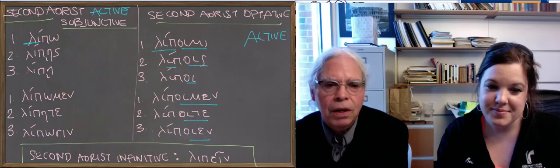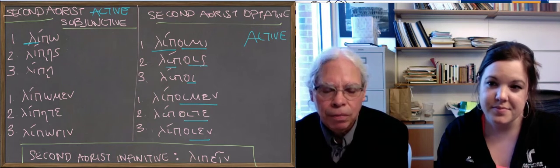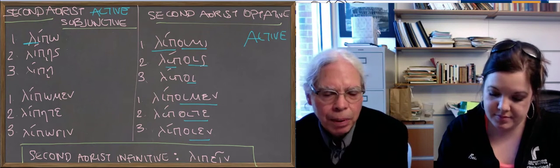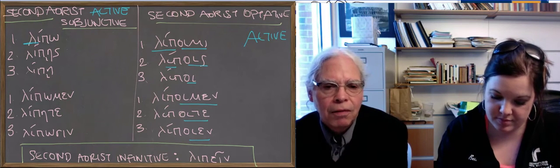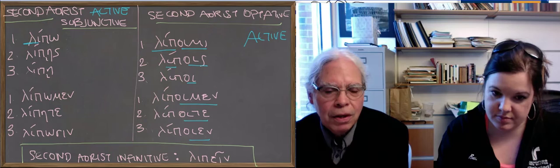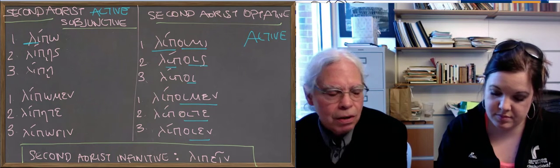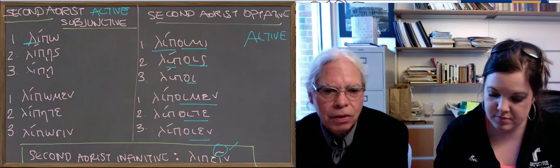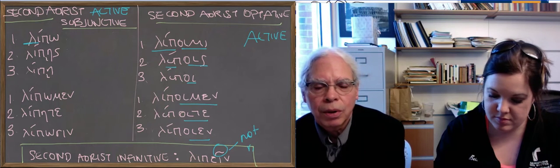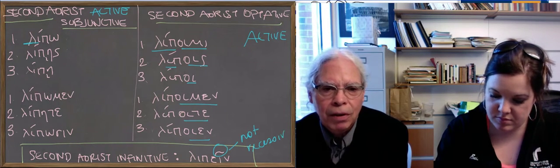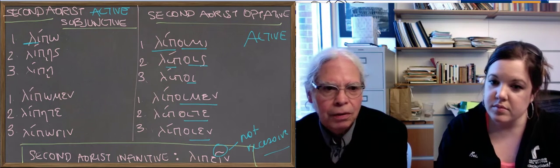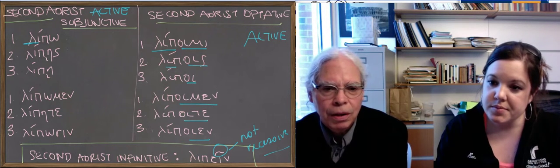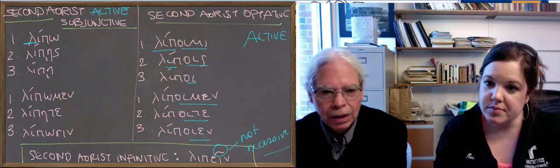Notice there is one funny thing about the second aorist infinitive. The ending is e-i-n, lipein, what you would expect for a thematic form like this, but its accent is weird. It has non-recessive accent on the last syllable. It's effectively, it's really what's being accented is the thematic vowel itself. We'll see more about this later on, but that's the way it works.